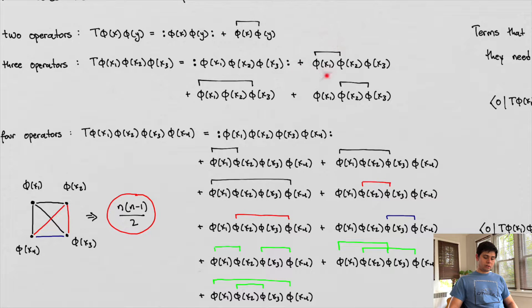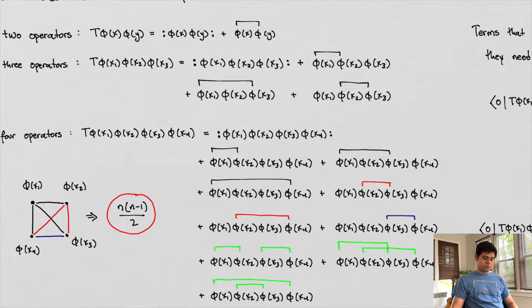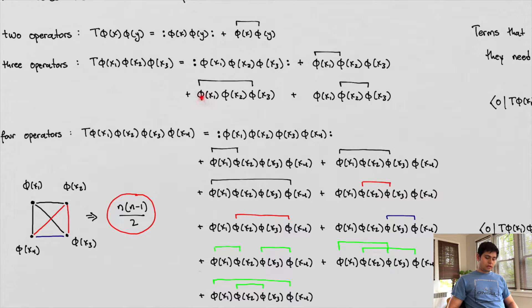So we can contract these two fields at one particular location and the field at another location. The ones and the twos don't refer to components of some spatial vector — they refer to different locations in space. We can contract the field at location one and location three, or we can contract at two and three.